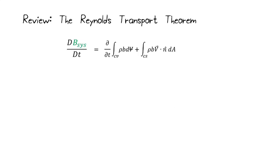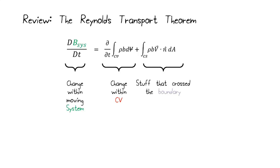Here's our review of the Reynolds Transport Theorem again. We know that we have the change within our moving system, our system is our packet of mass, our change within our control volume. Our control volume is this fixed region of interest, and then we have the stuff that crosses the boundary. This relates the Lagrangian, which is the system, and the Eulerian, which is the control volume perspectives of fluid mechanics.